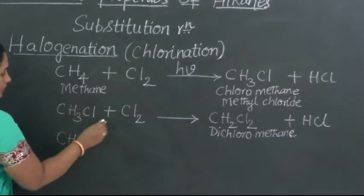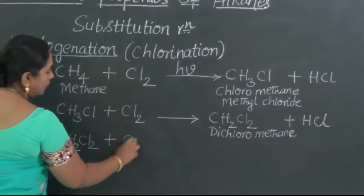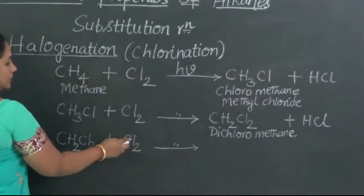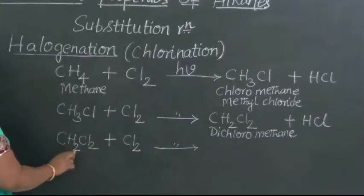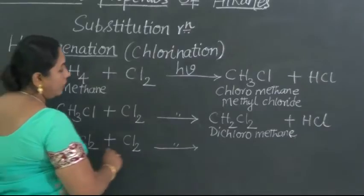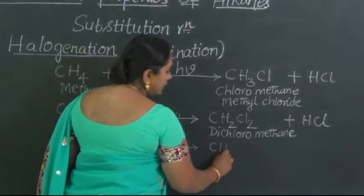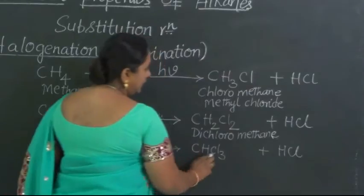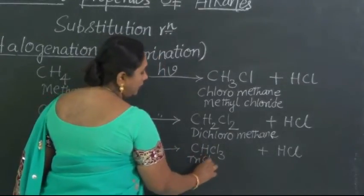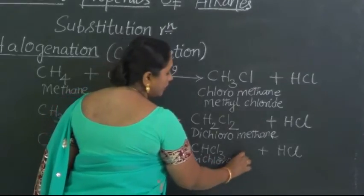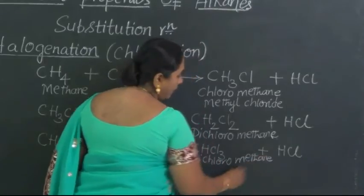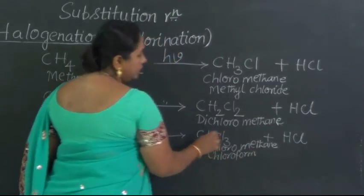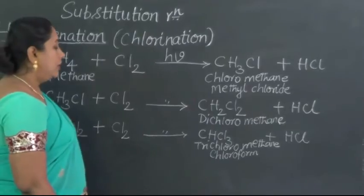In the next step, this dichloromethane will undergo further chlorination. When we maintain the same condition, what happens? This one more chlorine will replace one hydrogen and that coming out hydrogen will combine with other chlorine forming HCl. So what do we have? CHCl3 and HCl. What is CHCl3? Trichloromethane. Now this is a very important compound popularly called chloroform. Chloroform, which is used as an anesthetic drug.